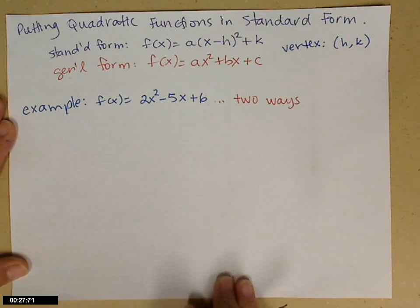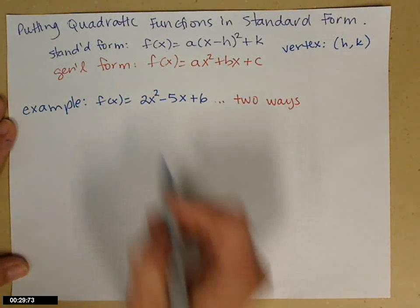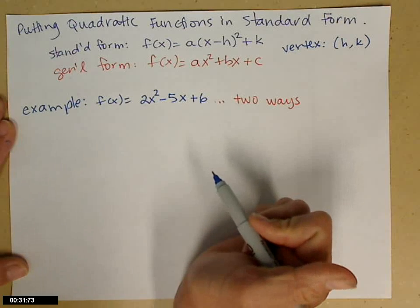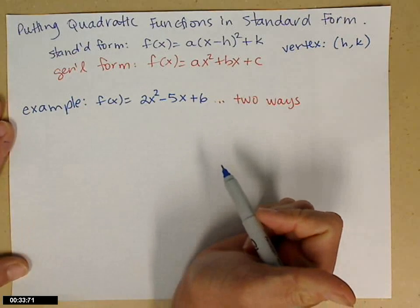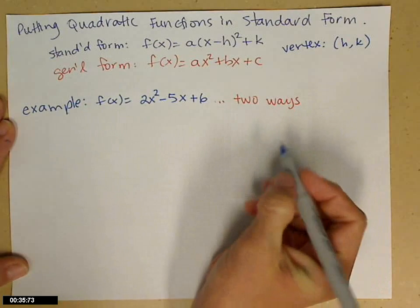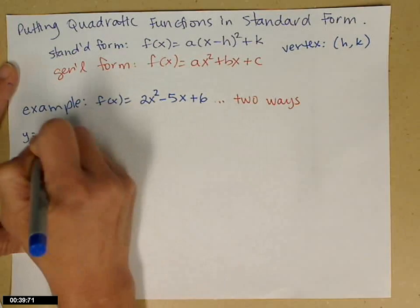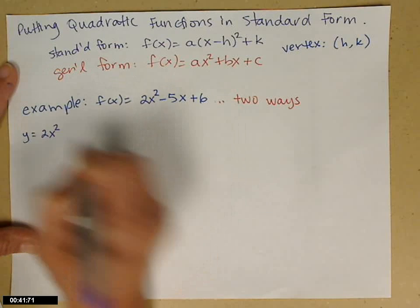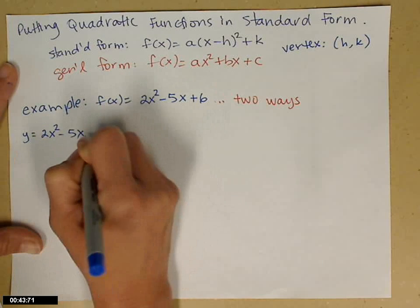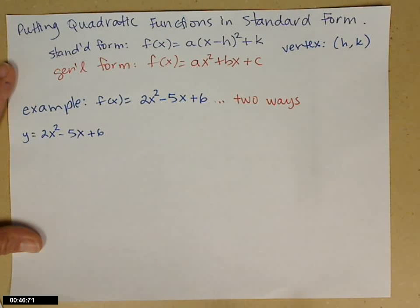Let's look at this example where a equals 2. f(x) equals 2x squared minus 5x plus 6. First I have to show you the really ugly way, which is completing the square. We want to complete the square on this, but we can only complete the square if the leading coefficient is 1, and right now it's 2.